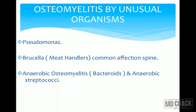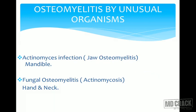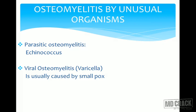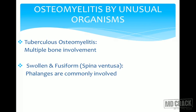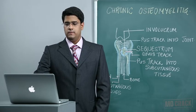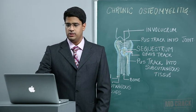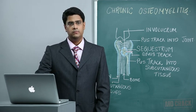Anaerobic osteomyelitis caused by Bacteroides and anaerobic streptococci also occurs. Actinomyces infection — also known as jaw osteomyelitis — is classically seen in the mandible, and fungal actinomycosis can affect the hand and neck. Parasitic osteomyelitis is caused by Echinococcus. Viral osteomyelitis is associated with varicella, classically caused by smallpox. Finally, tuberculous osteomyelitis has multiple bone involvement and is common in our country; spina ventosa affects the phalanges with fusiform swelling.